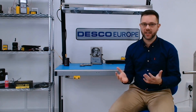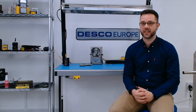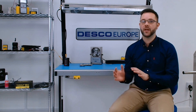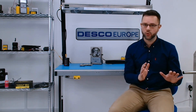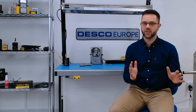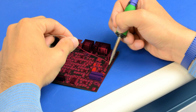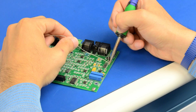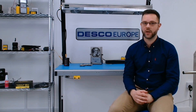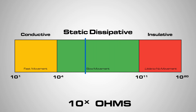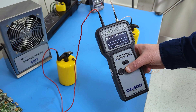Dissipative materials will still allow for the movement of electrons and so will still remove a static charge, however this will be in a slower, more controlled manner. This avoids rapid discharge from, let's say, a charged PCB onto a work surface, reducing the chance of that discharge causing damage to the PCB. Materials measuring above 10 to the 4 and below 10 to the 11 ohms are normally considered dissipative.